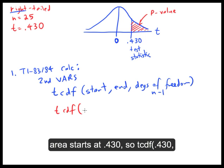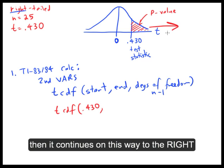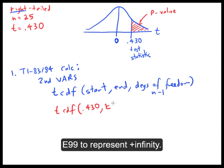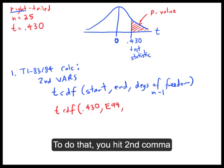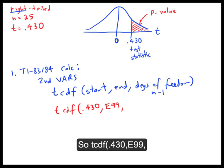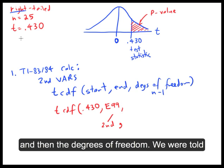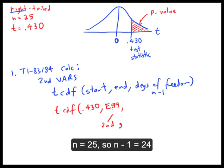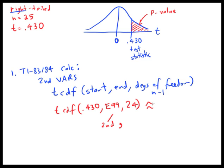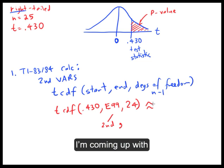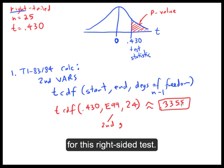which in the t-distribution is n minus one. In our case, the area starts at 0.430 and continues to the right, so we type E99 to represent positive infinity. You hit second and the comma button to get E99. So it's TCDF(0.430, E99, and then the degrees of freedom. Since n is 25, n minus one is 24. Punch that all into your calculator and the result is 0.3355.